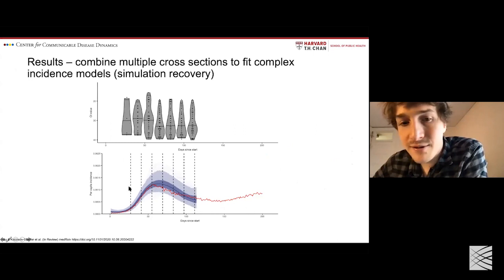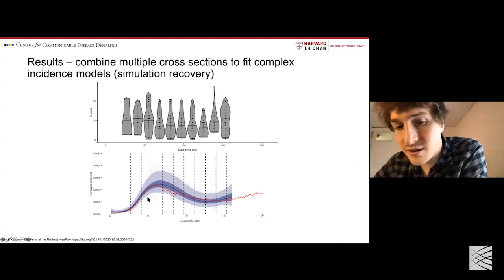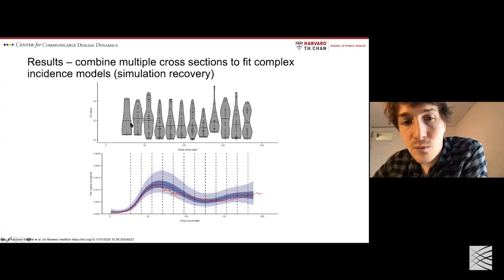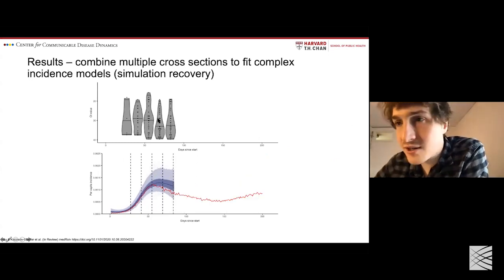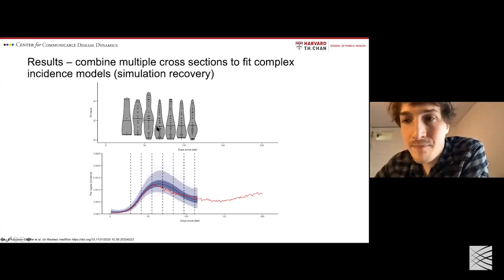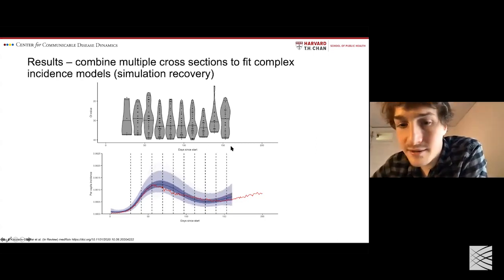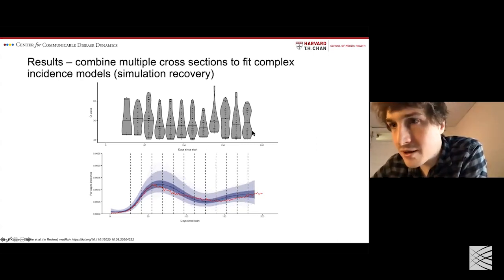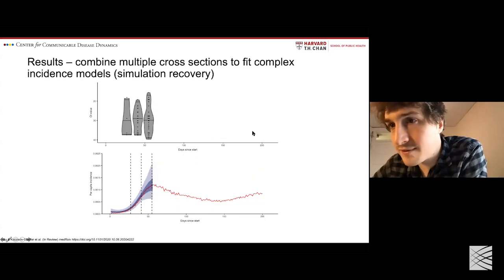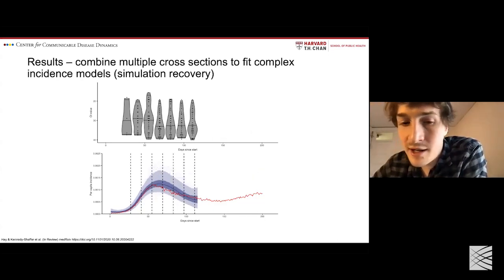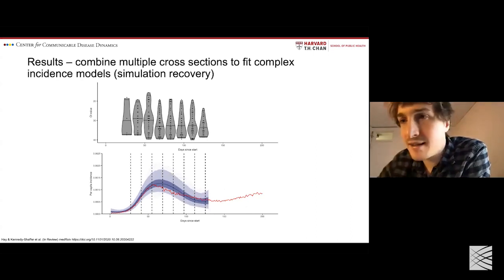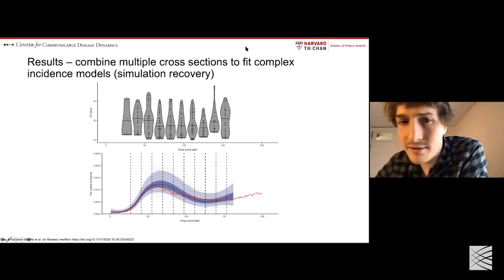We formalized these ideas in a preprint, developing a method for non-parametric inference of the epidemic incidence curve using cross-sectional viral load distributions. In a simulation framework, we have a true incidence curve in red. Each week we add a small cross-section of viral loads and continually update our estimate of the underlying epidemic incidence curve. By using the CT distribution rather than just binary positives and negatives, we maintain a very accurate estimate of the epidemic incidence curve.